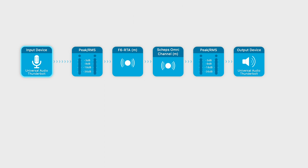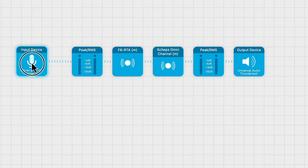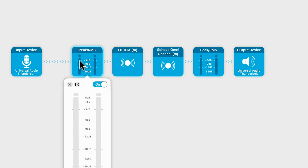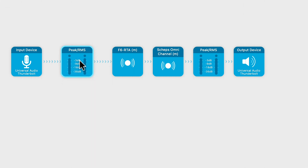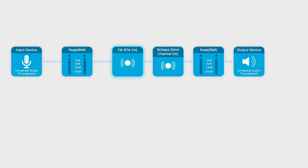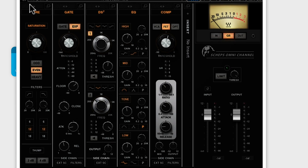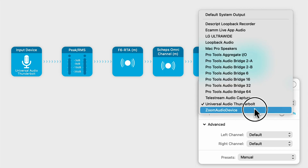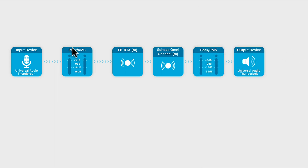I've created this particular system where I'm using my F6 and Sheps Omnichannel. You select your interface — it could be a Focusrite — and take the audio coming from it. I put it through a meter so I can check levels and do some gain staging. I send it to an F6 — that's an EQ setting I have for my voice — then to a Sheps Omnichannel for more EQ. After the Omnichannel it goes to another meter to make sure it's gain staged correctly, and then I can send it wherever I want: Zoom, another audio software, wherever.